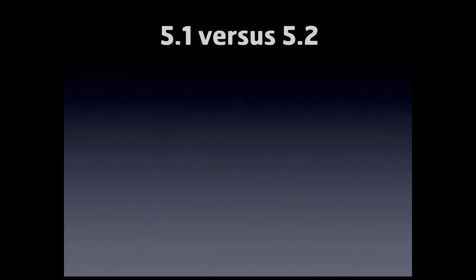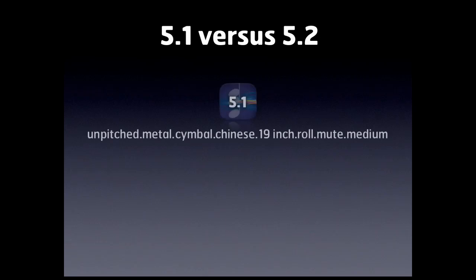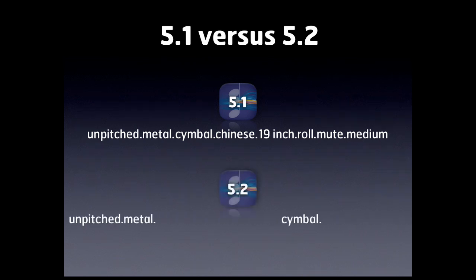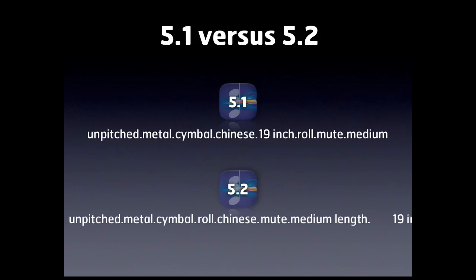As SoundWorld has developed, it's undergone some changes since we released our first template for Sibelius 5.1. Most importantly, the Sound ID structure changed a bit from Sibelius 5.1 to 5.2 in terms of the order and priority in which these Sound ID branches appear. Here's our original muted 19-inch cymbal roll as it appeared in the Sibelius 5.1 template, and now here's that same exact sound as it appears in the Sibelius 5.2 template. Notice the order of the branches has changed, mainly to allow for more universal forward compatibility as SoundWorld develops.